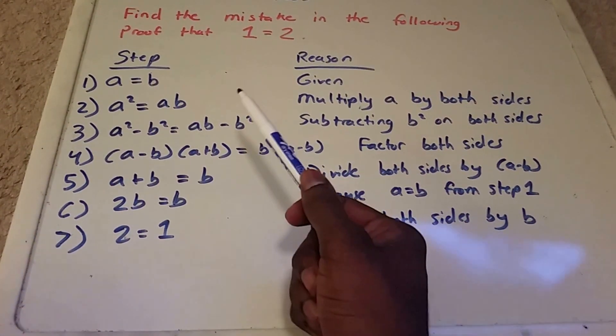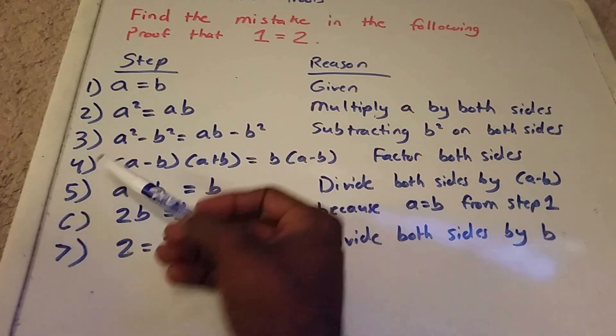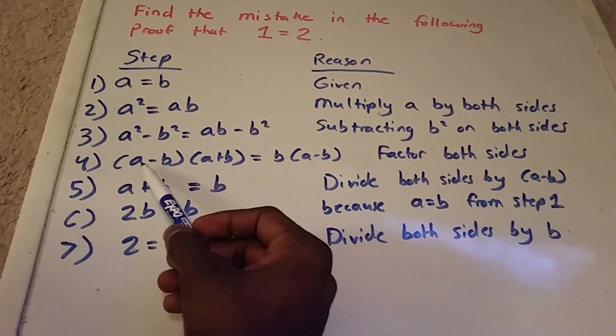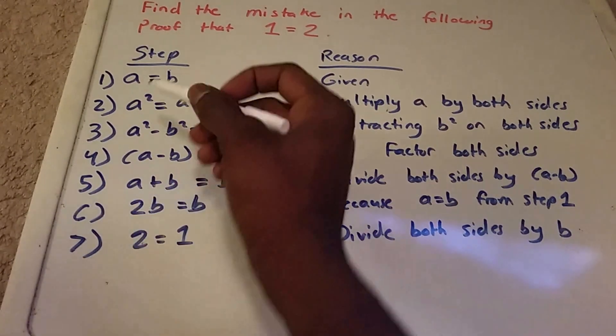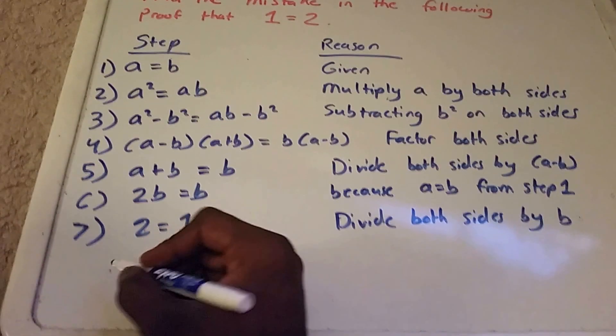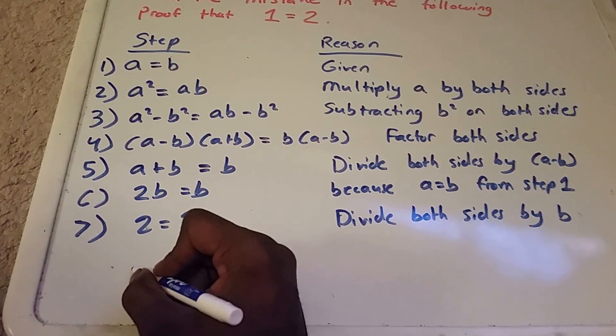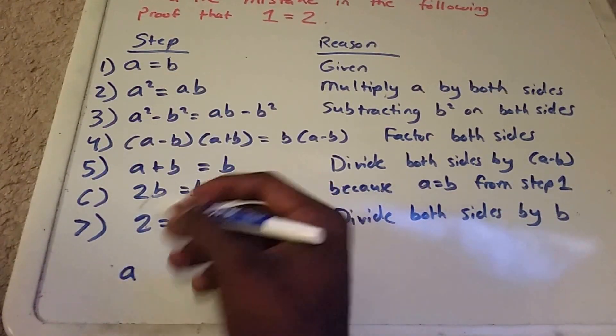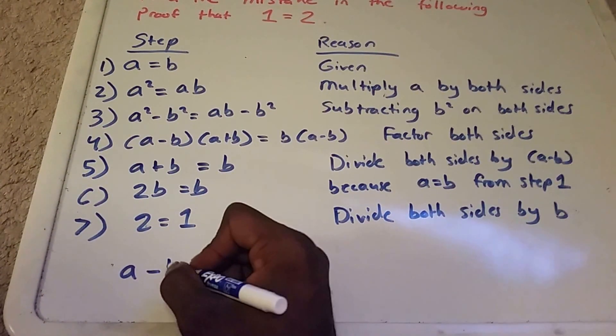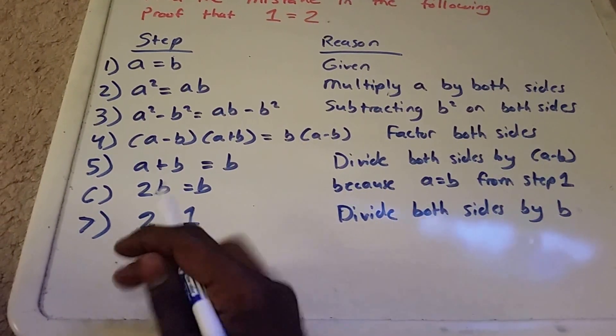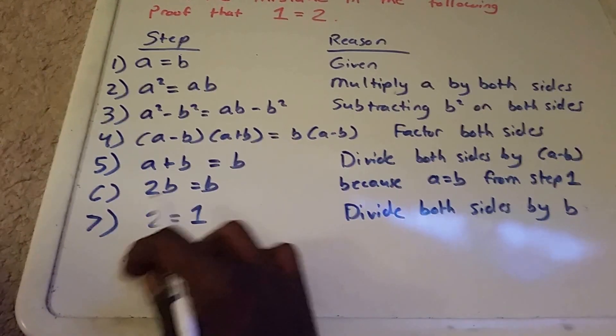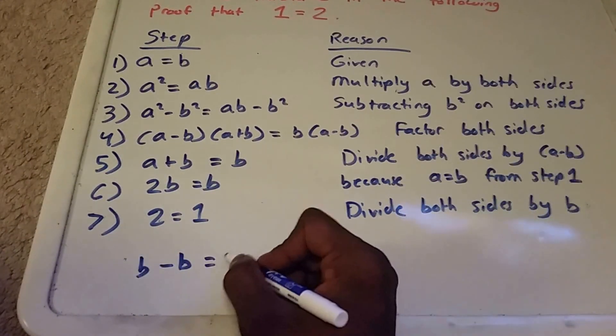But the actual problem was in step 5 when we divided both sides by (a minus b). Why? Well, from step 1 we said a equals b. So if a equals b, that means that we can replace either a or b with b or a. So we have here a minus b. If I replace a with b, we get 0.